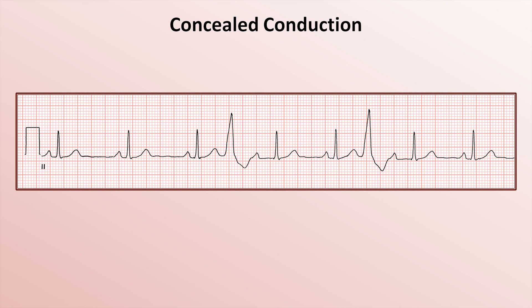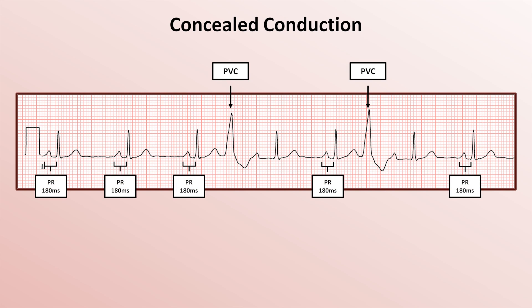First, consider this rhythm strip. We have what appears to be normal sinus rhythm with a rate of 60 beats per minute, and there are two PVCs. These are a special kind of PVC called an interpolated PVC, which means that it occurs early enough after the preceding sinus beat that the subsequent sinus beat is still conducted — in other words, there is no large disruption of the underlying sinus rhythm. However, look carefully at the PR intervals. For most of the sinus beats, the PR interval is about 180 milliseconds. However, for the sinus beats that come after the two PVCs, the PR is longer, about 310 milliseconds.